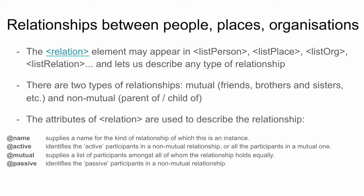You can have two different types of relations. They are either mutual — that is, like in a friendship or brotherhood, where everybody is on the same footing — or non-mutual, where someone is the parent of another and the other is the child of that parent, so the relationship is not the same in both directions.